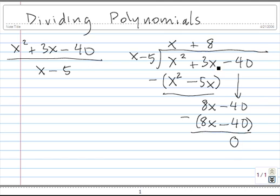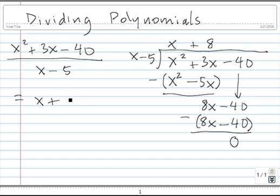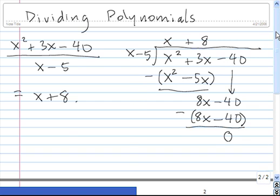So in this case, x minus 5 goes in evenly to x squared plus 3x minus 40, because we have no remainder — a remainder of 0. That means x squared plus 3x minus 40 divided by x minus 5 is equal to x plus 8. Let's do another one.